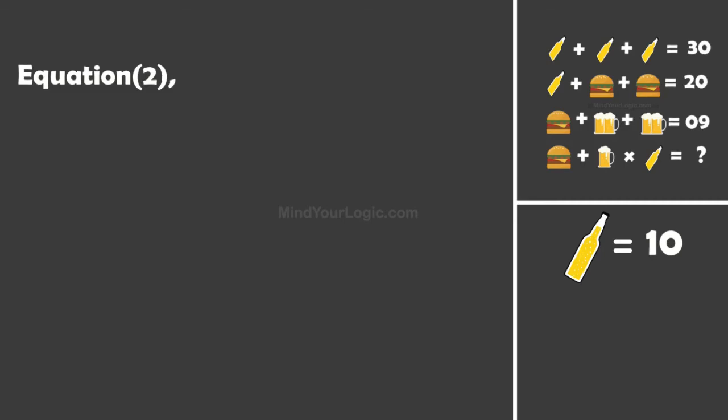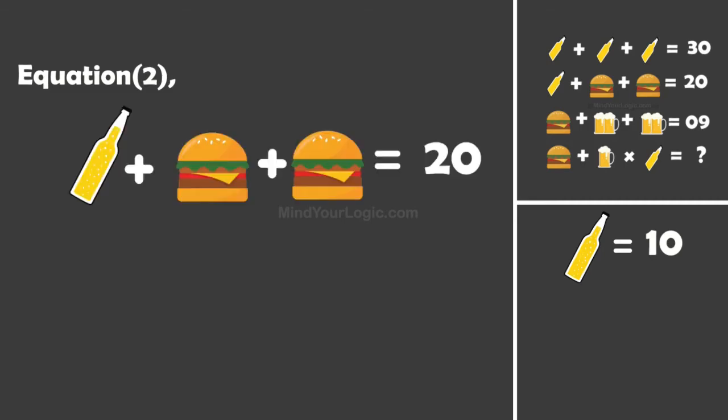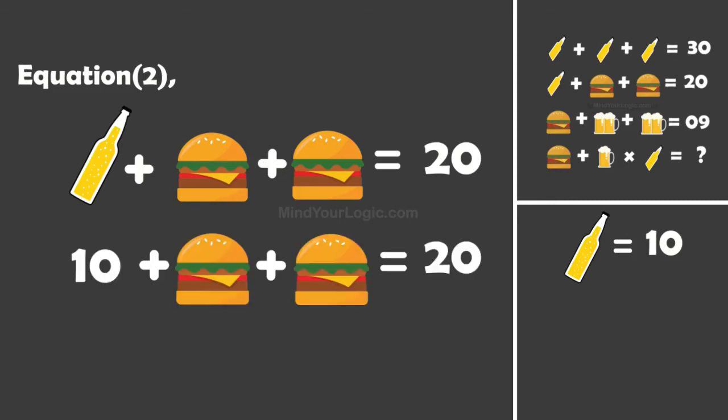Moving forward to equation 2: Bottle plus Burger plus Burger equals 20. Substituting the value of Bottle, we get Burger equals 5.